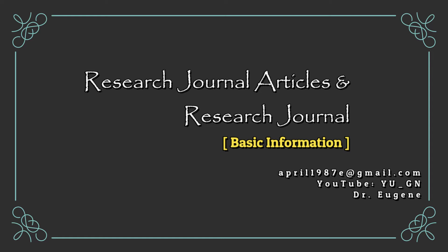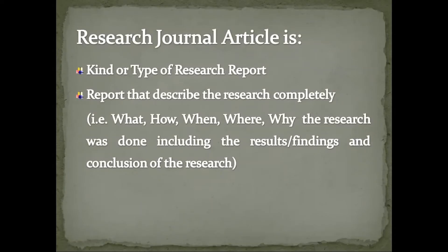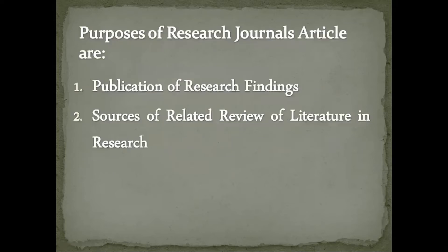First of all, let us be clear: what is a research journal article? A research journal article is actually a type of research report. There are different kinds of research reports, and a research journal article is one among those. It is a report that describes the research completely from head to toe — what, how, when, where, and why the research was carried out — and also includes the results, discussions, findings, interpretation, and the conclusion of the study.